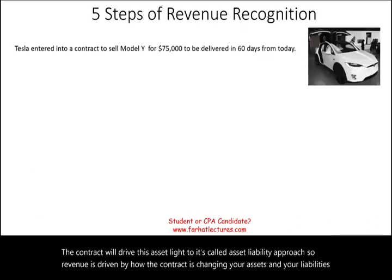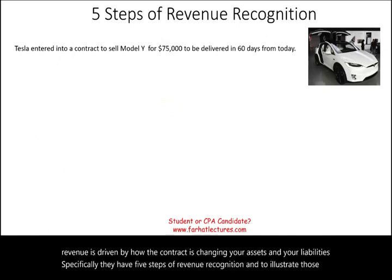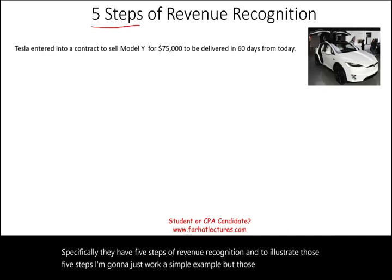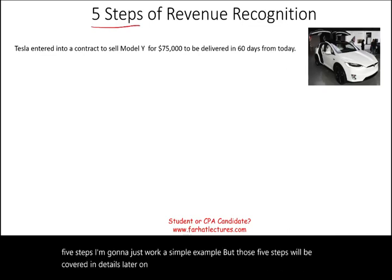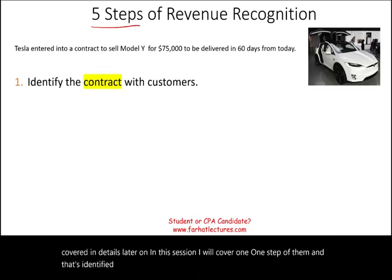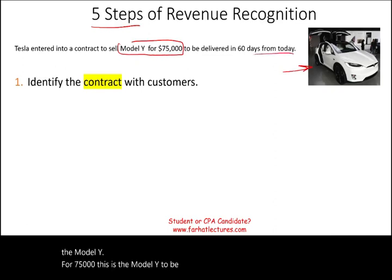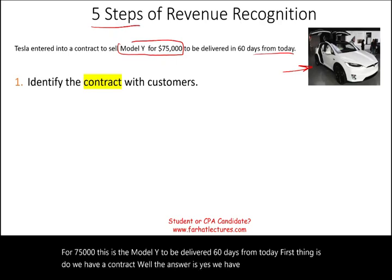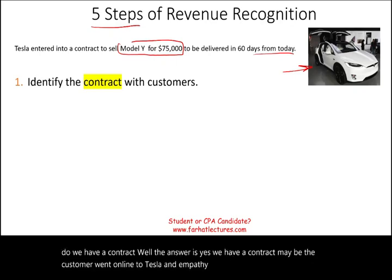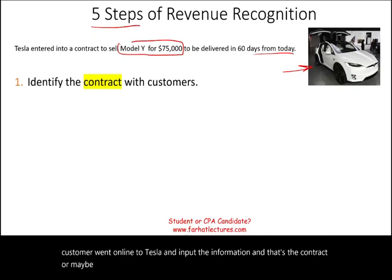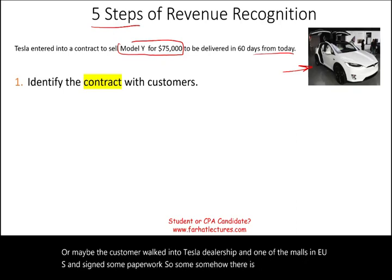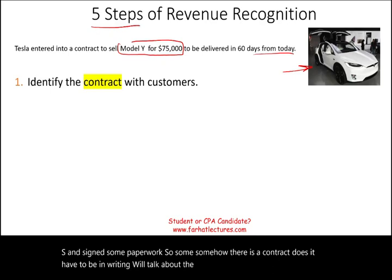They have five steps of revenue recognition. To illustrate, here's a simple example. Let's assume Tesla entered into a contract to sell the Model Y for $75,000, to be delivered 60 days from today. Step one: do we have a contract? The answer is yes — perhaps the customer ordered online or signed paperwork at a Tesla dealership. The contract doesn't have to be in writing, but there is an agreement between a buyer and Tesla.